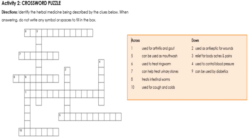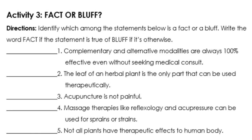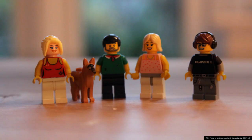Activity 2 — Crossword Puzzle: Identify the herbal medicine described by the clues. Do not write any symbol or spaces to fill in the box. Always include the activity number and name. Activity 3 — Fact or Bluff: Identify which statements are fact or bluff. Statements include: complementary and alternative modalities are always 100% effective even without medical consult; only the leaf of an herbal plant can be used therapeutically; acupuncture is not painful; massage therapies like reflexology and acupressure can be used for sprains or strains; not all plants have therapeutic effects. Keep safe everyone, remember to answer the reflections as part of your modules.